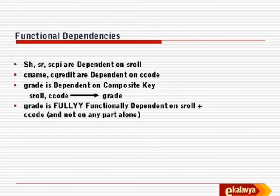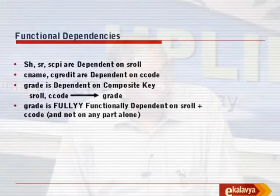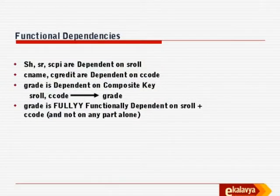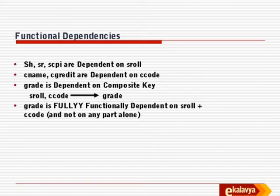Here are some functional dependencies easily seen from this single table. Hostel, room number, and CPI are dependent on roll — because once a roll number comes, the same roll number must have the same room number, same hostel, same CPI, since we are talking about the same student. Similarly, course name and course credits are dependent on course code. And grade is dependent on the composite key: grade is dependent on S_roll and C_code, which is the primary key of the table.